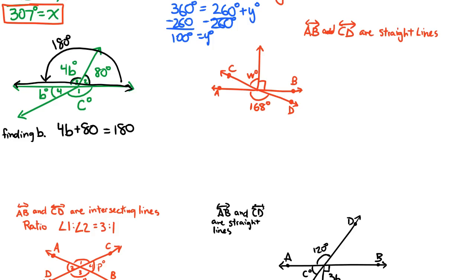Let's solve this equation. We need to isolate our variable terms — subtract 80 from both sides. So we have 4b = 100. What do we multiply 4 by to get 100? If we divide 100 by 4, we get 25. So b = 25.